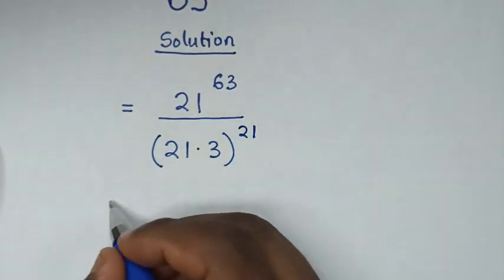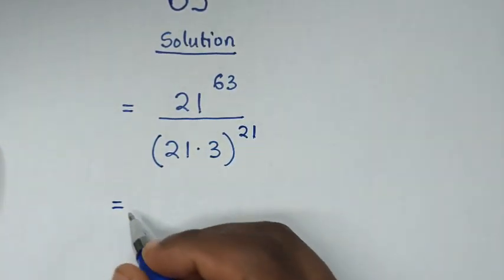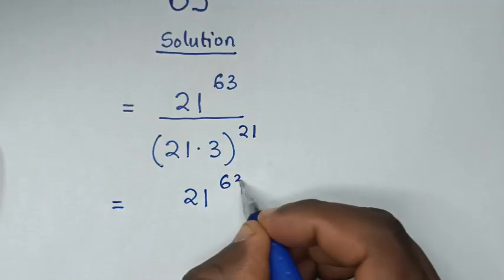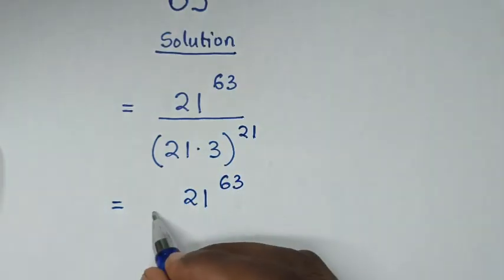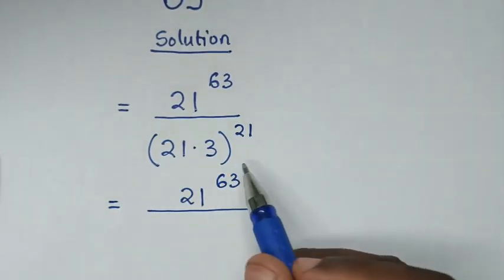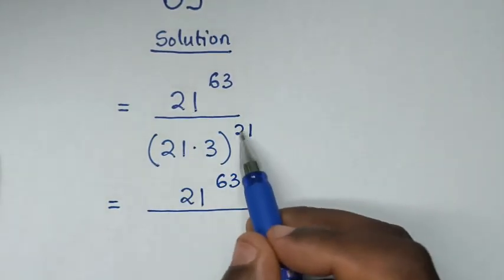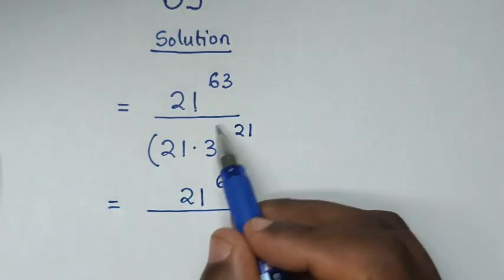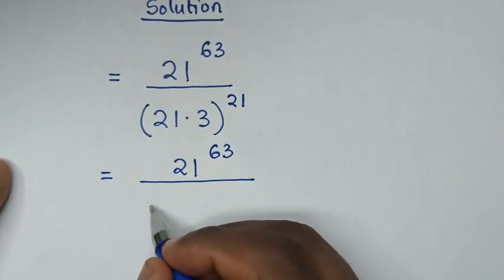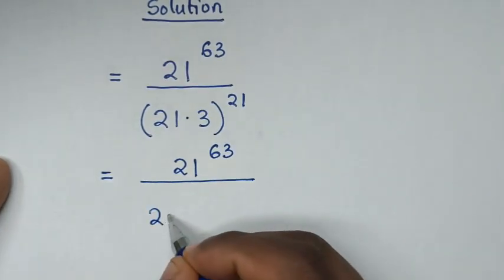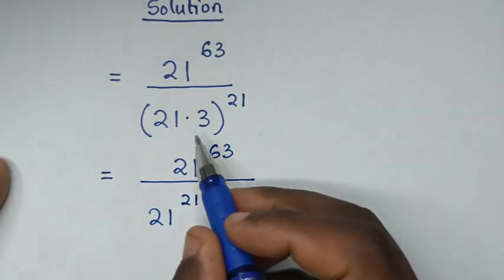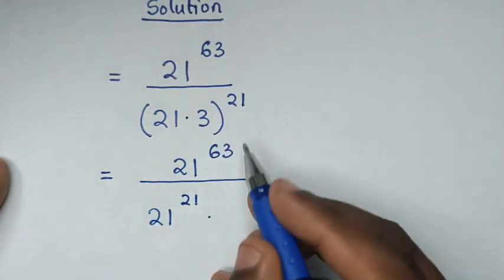Then, in the next step, it will be equal to 21 power of 63 over — in the denominator, we take the power of 21 into each base, so it will be 21 power of 21 times 3 power of 21.